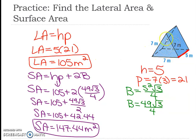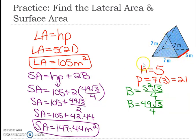The surface area is the whole thing. Lateral means side, so it's the sides plus two bases. You have HP, which is 105, plus 2 times the base area. The base area uses the equilateral triangle formula: S squared times radical 3 over 4. That is the area formula for an equilateral triangle.